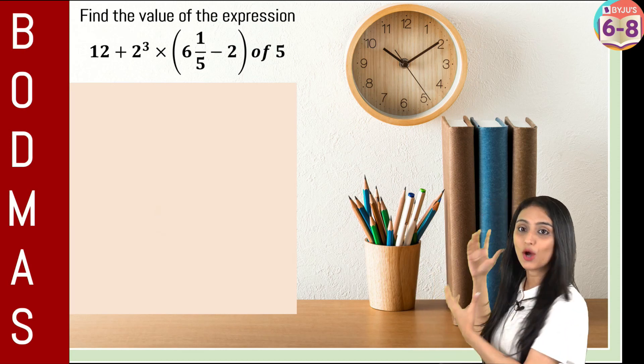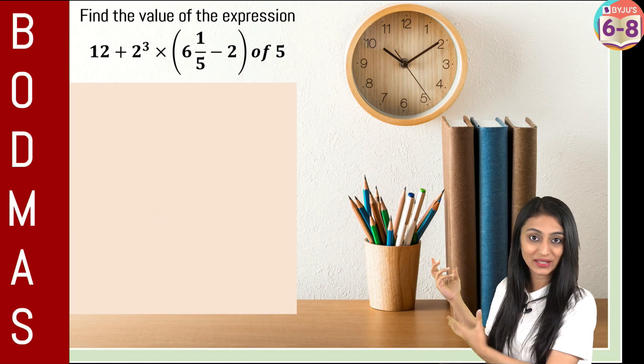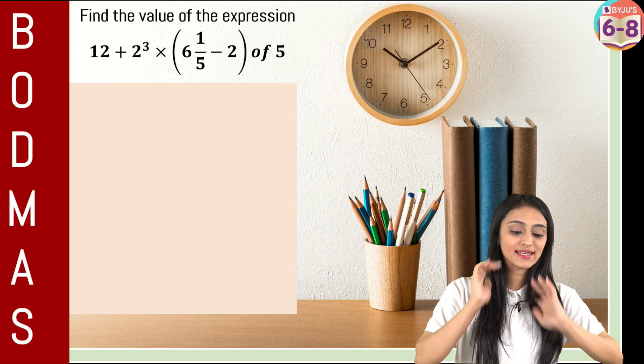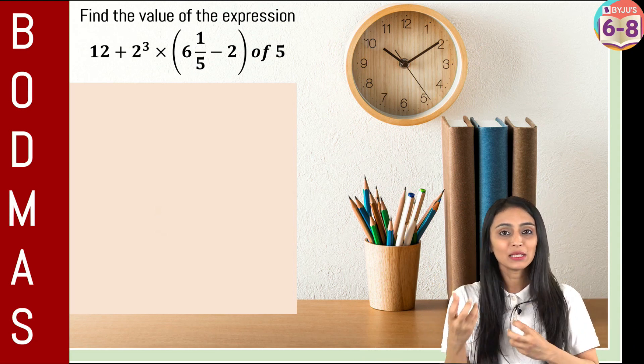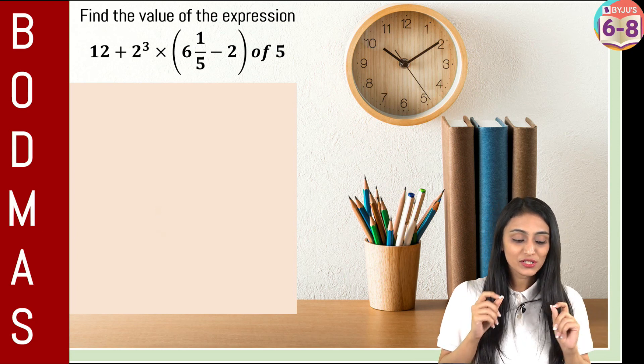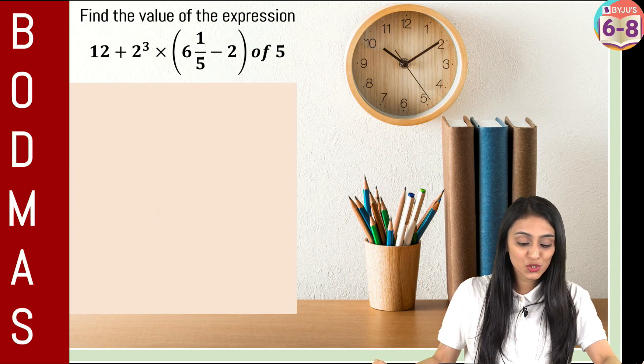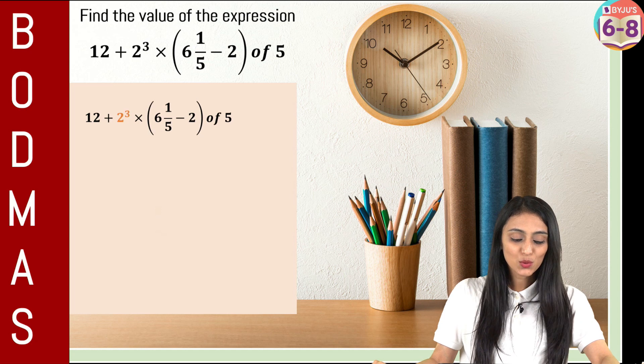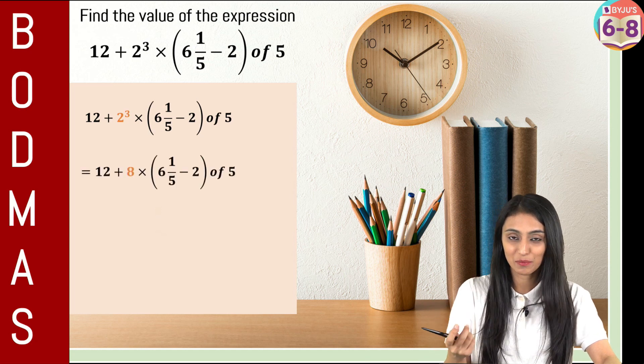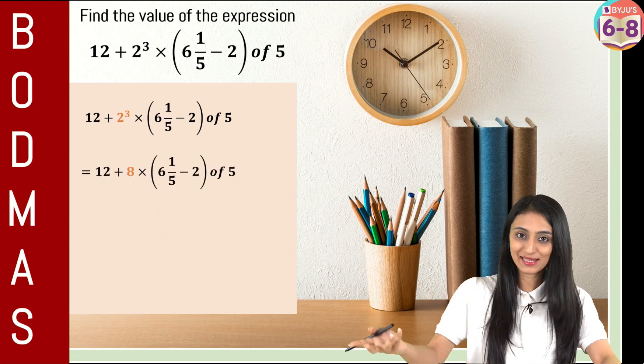Now this is given in the proper order. Like where should we start from? It actually tells us. So here in this expression we can see addition, multiplication, subtraction, bracket, off. Now first of all we are going to be starting with this 2 cube. So we know that 2 cube could be simplified as 8 because 2 times 2 times 2, that's basically 8.